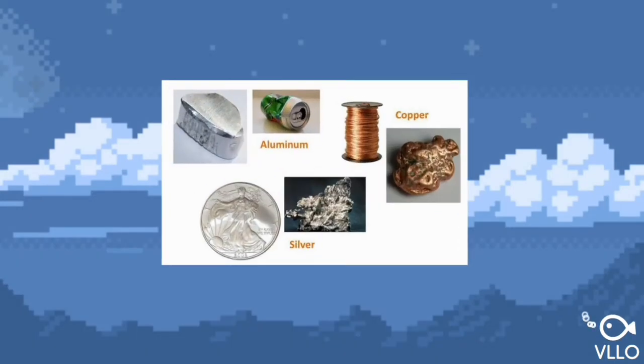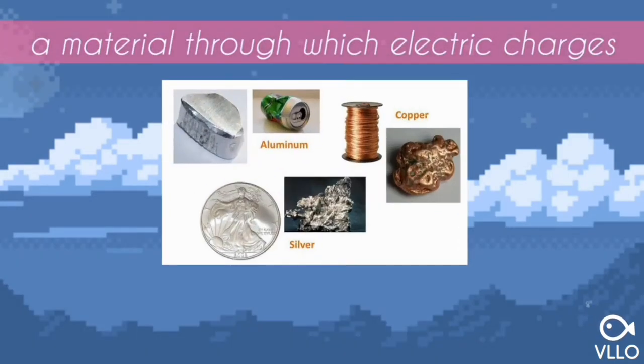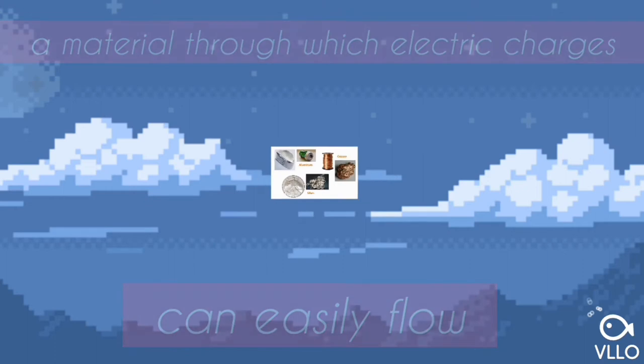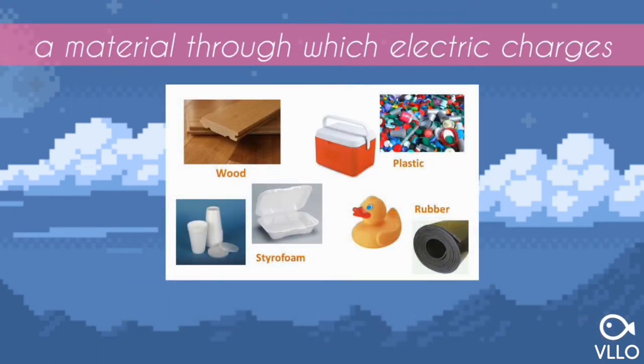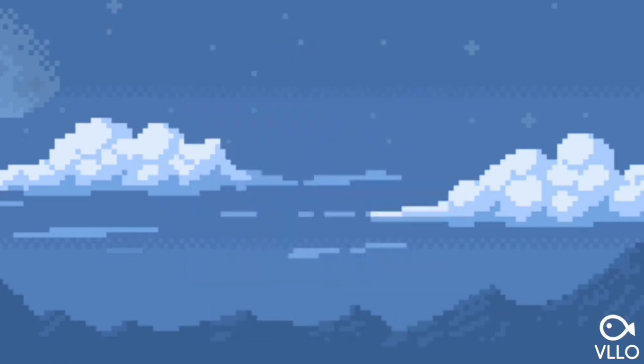A conductor is a material through which electric charges can easily flow. An insulator is a material through which electric charges do not move easily, if at all.